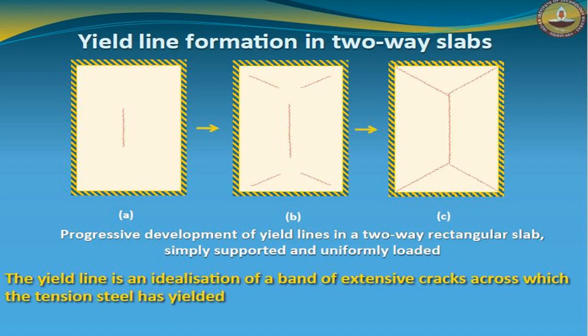As the maximum moment happens at the centre of the slab, the cracks start to form at the centre and slowly propagate towards the boundary. So this yield line finally ends at the boundary of this slab.